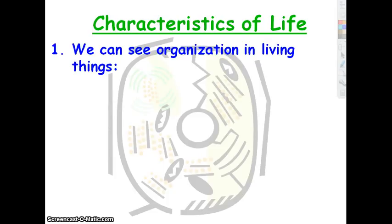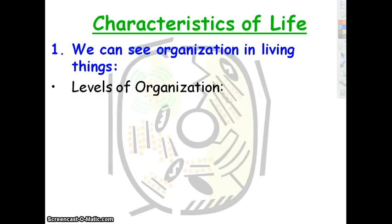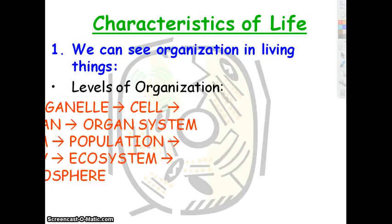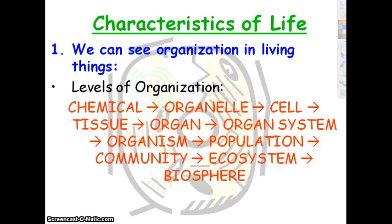The first characteristic living things share is that they're organized — they're put together in a particular way. We know these levels of organization, which you've likely already learned. We start at the chemical level with atoms, and the atoms make compounds. Then if those compounds are assembled in a particular way, we get organelles.